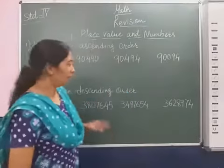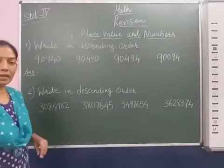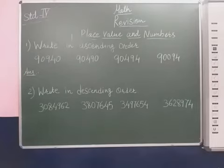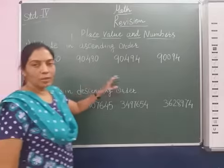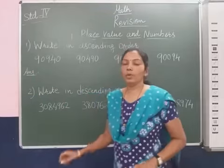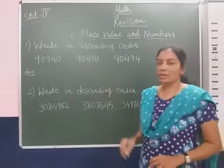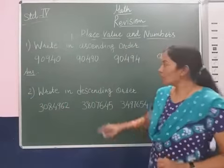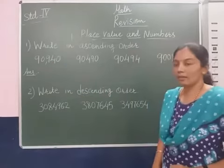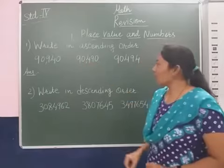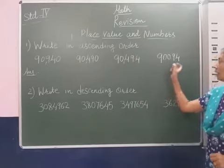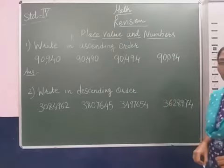Now students, let's look at ascending and descending order. In this question, we need to write in ascending order — 4 numbers are given. So what we have to do first is put the commas to understand the numbers in series. So here, we have 5-digit numbers: 90,940 — 90,490 — 90,494 — and 90,094.